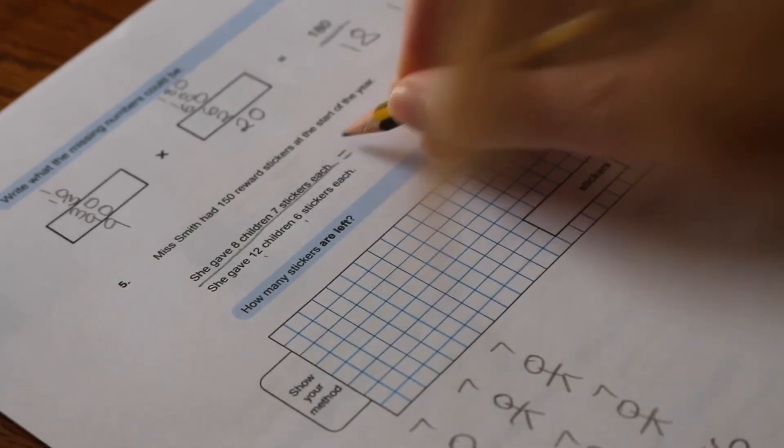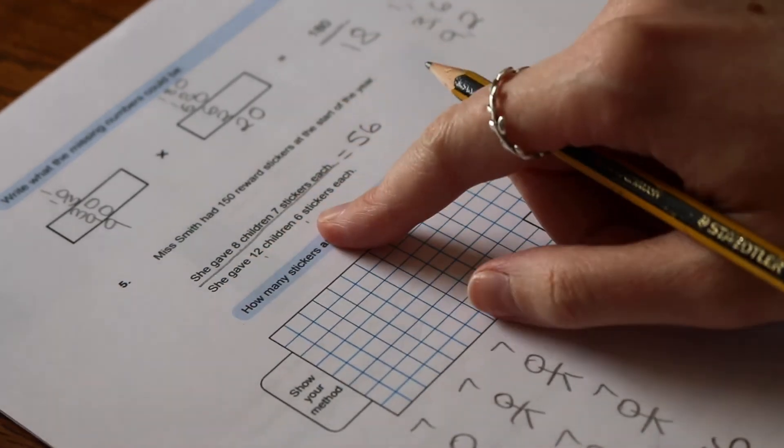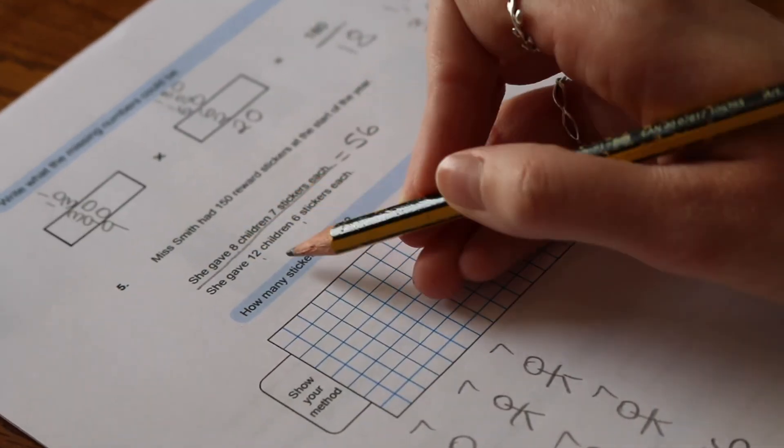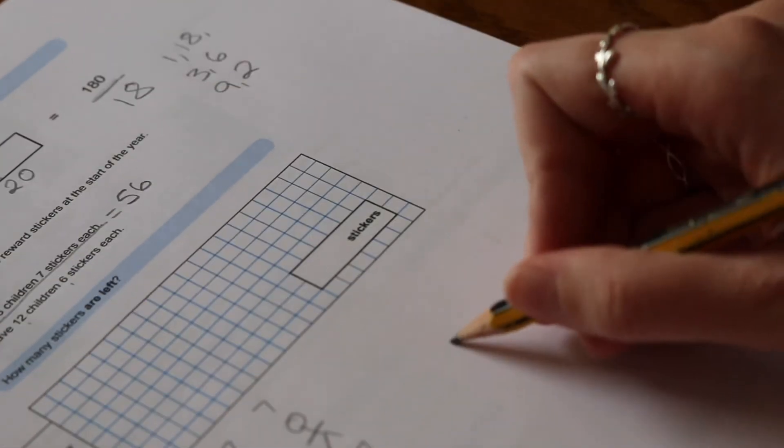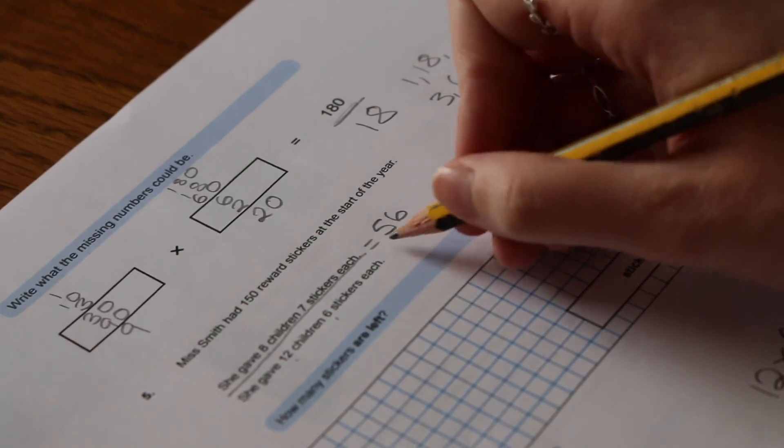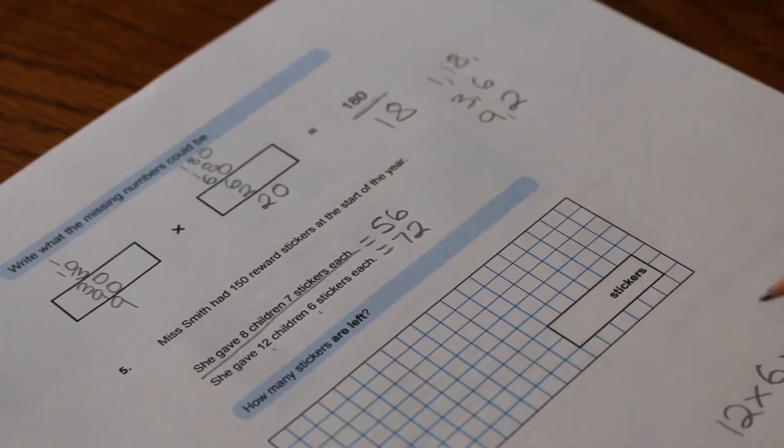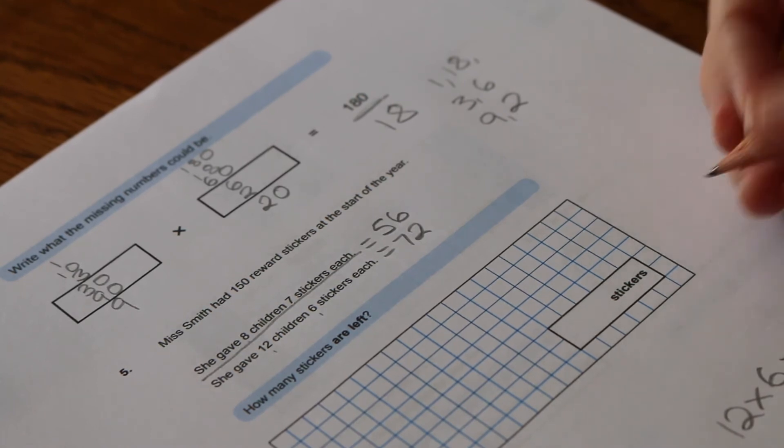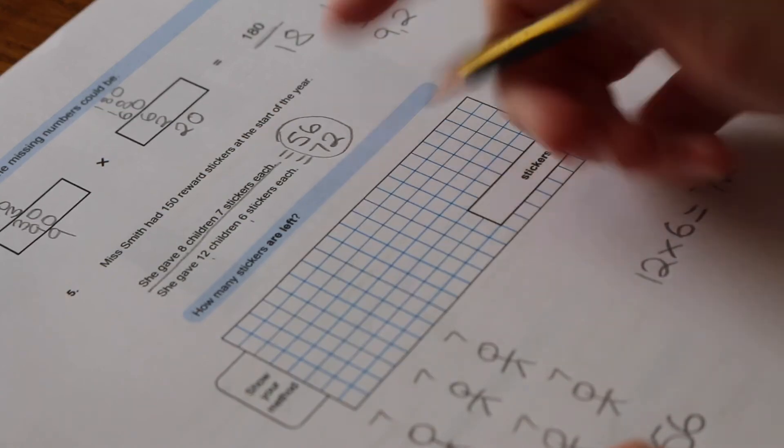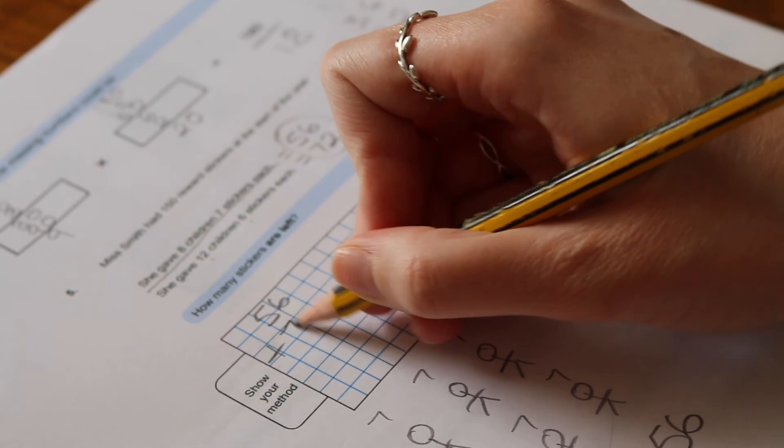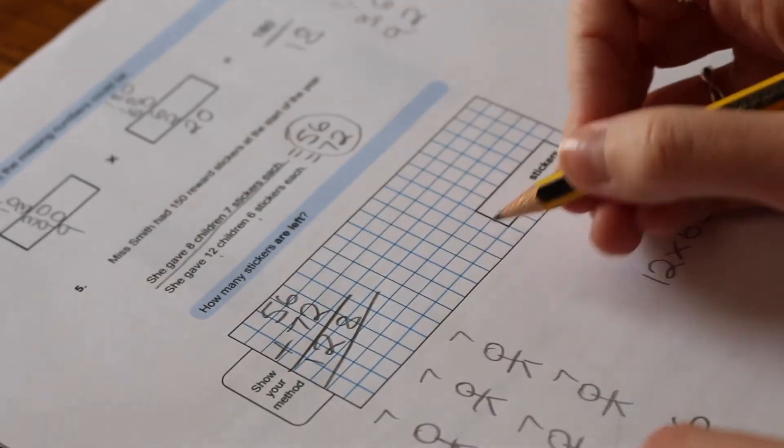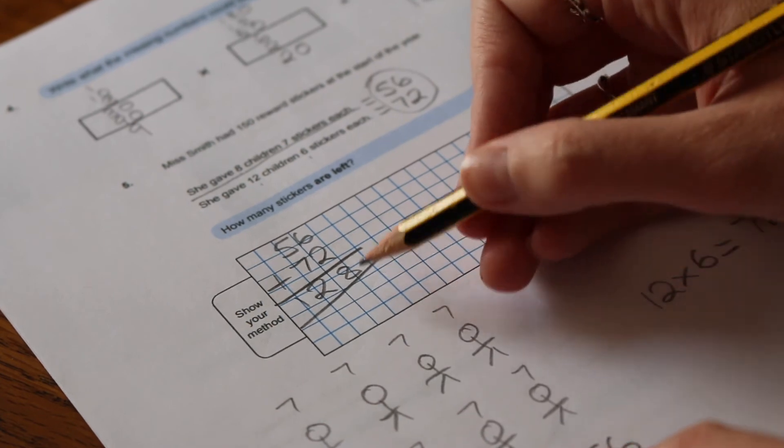Then she gave 12 children 6 stickers each. So if we do for this one, if we're doing 8 times 7, then we know that for this one we're doing 12 times 6. So 12 times 6 equals 72. So this statement of children got 72 stickers each. Now we need to find out how many children she gave stickers to in total. So I'll do that in the box here, because total means that you add these two numbers together. So 56 add 72: 6 add 2 is 8, 5 add 7 is 12. So she gave out 128 stickers.